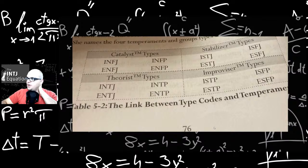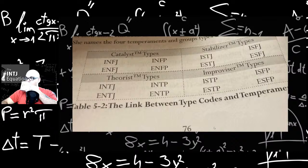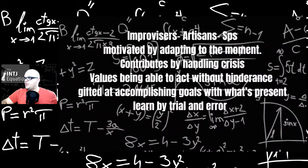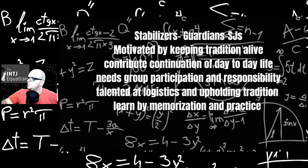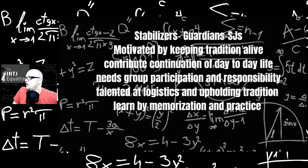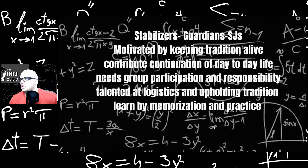Here is basically, he uses Linda Barron's temperament names to break apart the types. I don't want people to relabel these over and over. Improvisors are artisans, aka SPs, motivated adapting to the moment. So these are ESFPs, ISFPs, ESTPs, ISTPs. Contributes by handling crises, values being able to act without hindrance, gifted at accomplishing goals with what's present, learned by trial and error. Stabilizers, aka guardians and SJs, motivated by keeping traditions alive, contribute continuation of day-to-day life, needs group participation and responsibility, talented at logistics and upholding tradition, learned by memorization and practice. So these are the ESTJs, ISTJs, ESFJs, ISFJs.